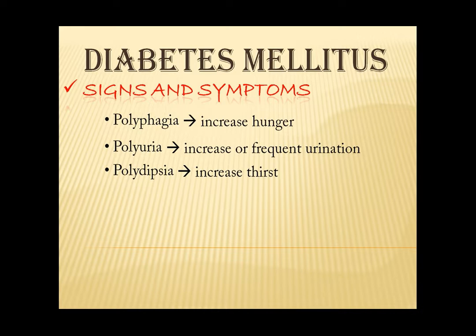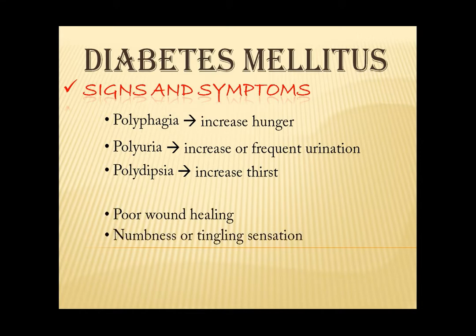Due to the increased blood glucose level in the bloodstream, they tend to attach to hemoglobin. Hemoglobin is a protein that can be found inside the red blood cells that carries oxygen to the body. So uncontrolled high glucose level in the blood or hyperglycemia will cause the hemoglobin to result in slow or decreased release of oxygen to different parts of the body, which will now cause poor wound healing especially on the lower extremities, numbness or tingling sensation in the hands or feet, and fatigue or tiredness. Lastly, we have unexplained weight loss.